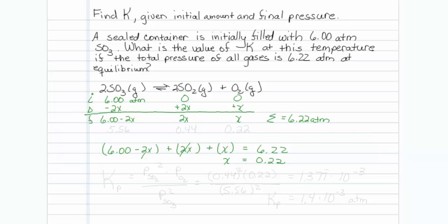I will go back now and fill that in. So this is 0.22, this is 2x so it is 0.44, and this is 6 minus 0.44 so that should be 5.56.